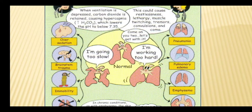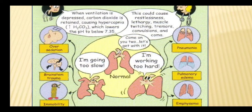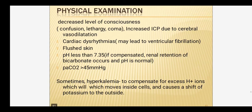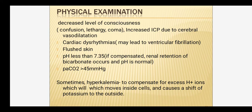These conditions cause retention of carbon dioxide, causing hypercapnia, which lowers the pH to below 7.35. Symptoms include restlessness, lethargy, muscle twitching, tremors, convulsions, coma, and vasodilatation. On physical examination, there is decreased level of consciousness — patient will be confused, lethargic, or in coma — and increased ICP because of cerebral vasodilatation caused by carbon dioxide.